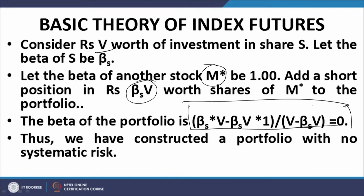By using this simple elementary mechanism, we have been able to construct a portfolio which is devoid of systematic risk. We have security S with investment V and beta equal to beta_S, and we short stock M* with value equal to V times beta_S. The beta of this combined portfolio — a long position in S and a short position in M* — equals zero. Therefore, this combined portfolio has zero systematic risk. Now, what happens if this stock M* is replaced by the market portfolio M?